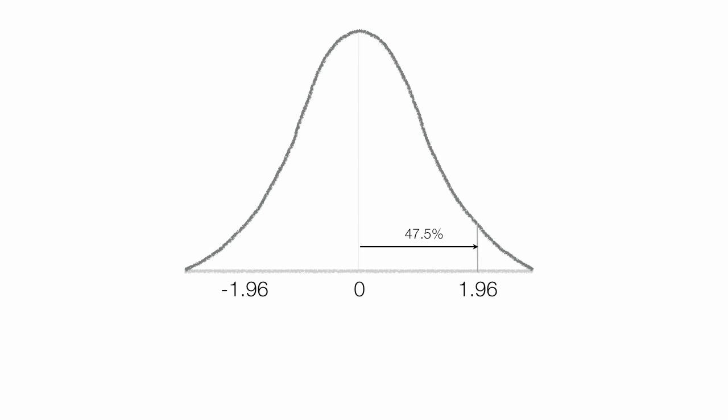Now I'll draw in a Z-score of negative 1.96. Again these are Z-scores. The likelihood an observation is less than 0 and greater than negative 1.96 is 47.5% also.